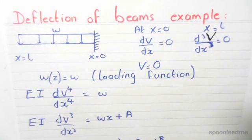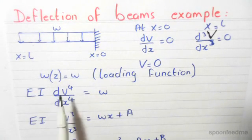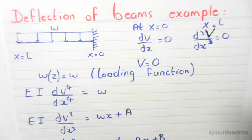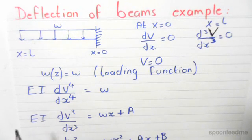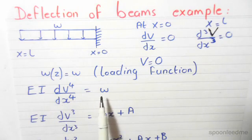So the first thing we have to know is that the loading function equals W. Now, how do we get the deflections from a loading function? We have to integrate it four times. Using the governing equation of deflections, EI d⁴v/dx⁴ equals W. This is the loading function.